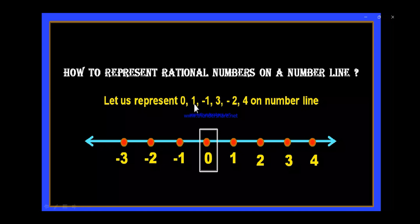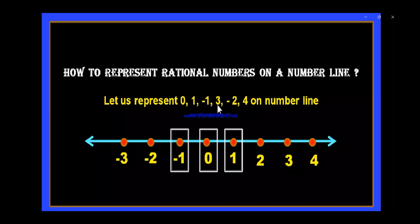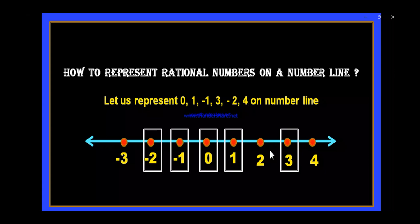Next is 1. Where can you find plus 1? Here is plus 1 — let us box this point. This is the point which represents 1. Next is minus 1, which is here — let us box this minus 1. Next, the number 3: this is the point which represents plus 3, so let us box this. Next, minus 2 — you can find minus 2 here, let us box minus 2. Next, plus 4 — you can find plus 4 here, let us box plus 4.